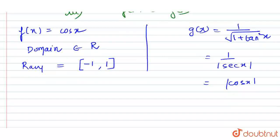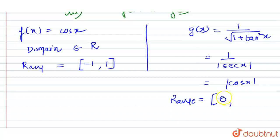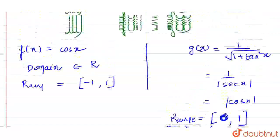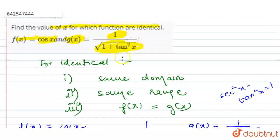Mod of cos x means there should be only positive values of cos x. So this is possible only in the range 0 to 1, because minus 1 is negative. So the range of g(x) will be 0 to 1. And the domain — since the actual function was in terms of tan x — we need to account for where tan x is undefined.